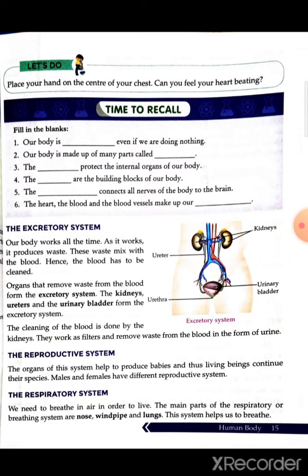Another important organ system is the respiratory system. We need to breathe in air in order to live. We human beings, animals, and birds breathe in oxygen and breathe out carbon dioxide. Plants, on the other hand, breathe in carbon dioxide and produce oxygen through photosynthesis. We then breathe in that oxygen and breathe out carbon dioxide, maintaining the balance of oxygen and carbon dioxide.